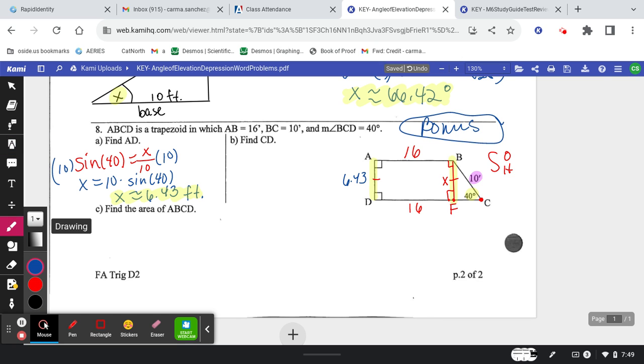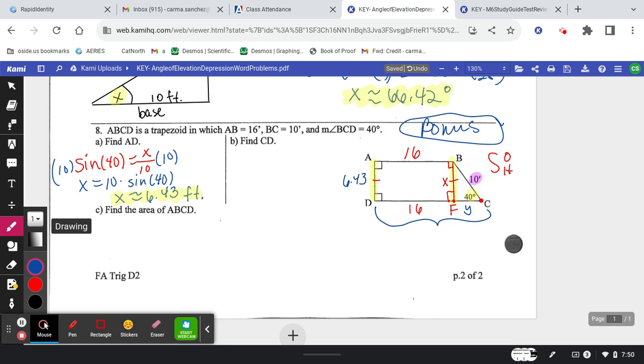Let's see what it wants next. Next it wants CD, which is this whole length. I've already got the 16, I'm just missing this little part FC. So guess what? I could use trig again to find this bottom side. I'm going to call it Y. So I would be doing the adjacent over the hypotenuse this time, and that's a cosine.